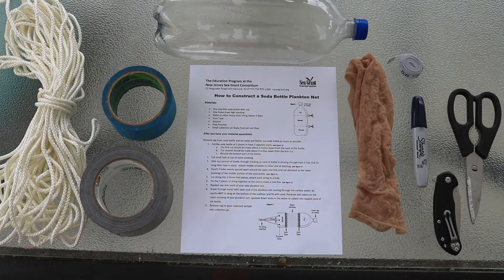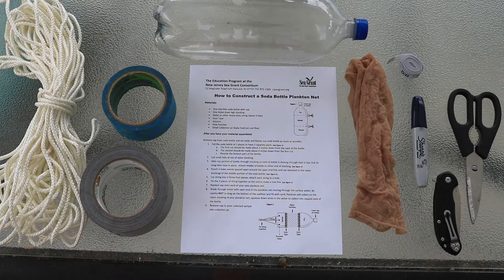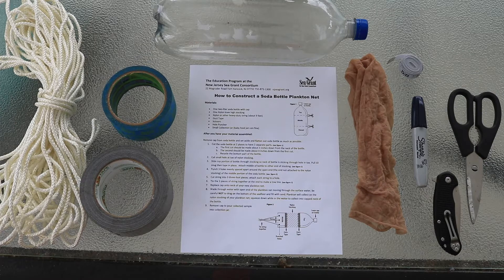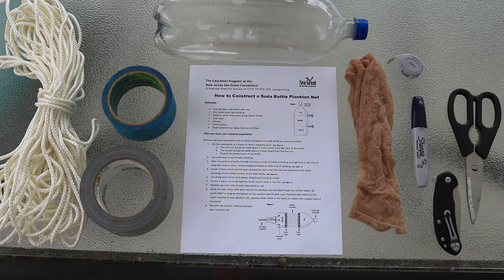For the materials, we're going to need one 2-liter bottle with cap, one nylon knee-high stocking, nylon rope about 9 feet, some duct tape, scissors, a hole punch, and a small collection jar.